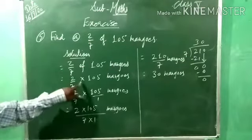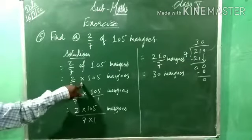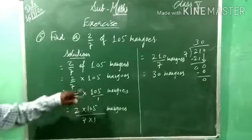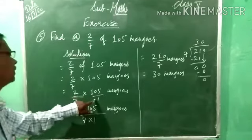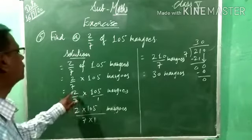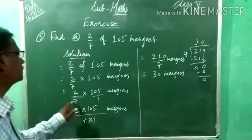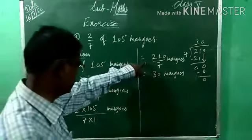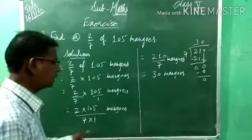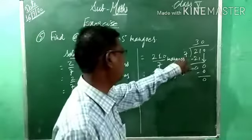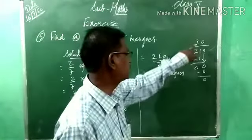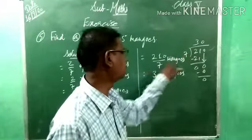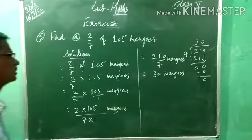So, 'of' means multiply. 2 by 7 into 105 by 1. Then 2 into 105 equals 210; 210 divided by 7: 7 threes are 21, bring down 0. So 7 into 30 equals 210. Answer is 30 mangoes.